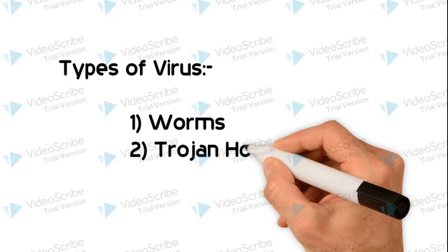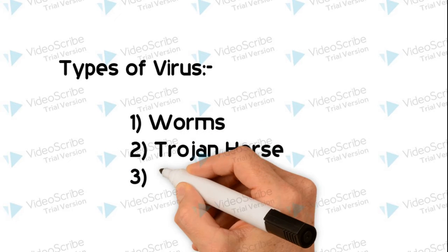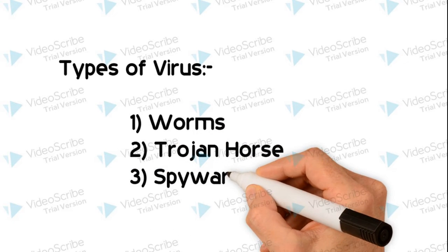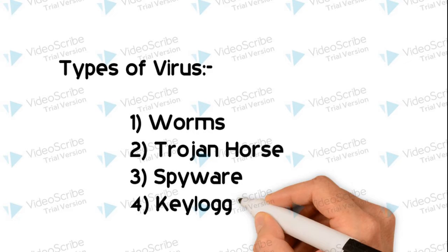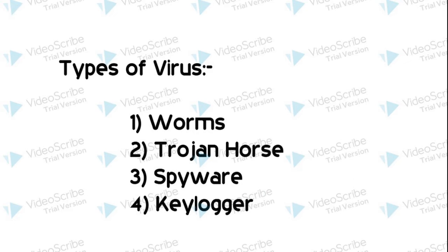Virus types can be: Trojan Horse, spyware, and keylogger. We will talk about each one step by step in this video.